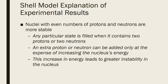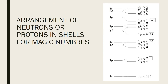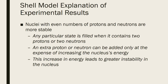Several experimental results support the shell model. Nuclei with even numbers of protons and neutrons are more stable because the paired +½ and −½ spins satisfy Pauli's exclusion principle. Any particular state is filled when it contains 2 protons or 2 neutrons — for example, the 1s state containing either 2 neutrons or 2 protons is a complete state.